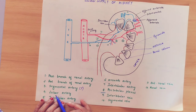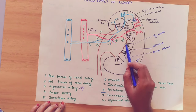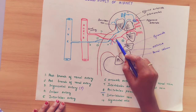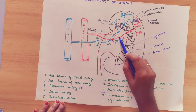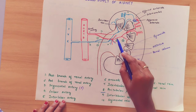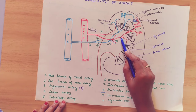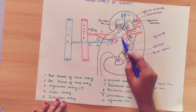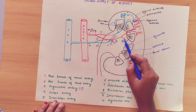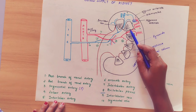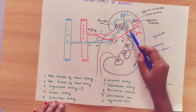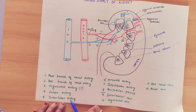Each segmental artery gives a branch called the lobar artery. The lobar artery is the second level. From the lobar artery, branches go further — on the left and center — and these are called the interlobar artery.